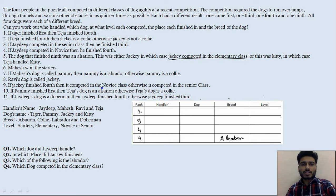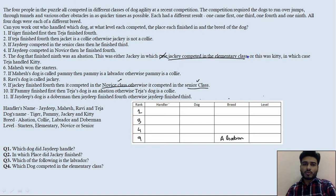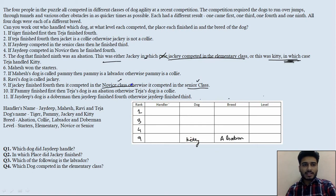The ninth condition says: if Jackie finished fourth then it competed in the novice class, otherwise it competed in the senior class. So the only two classes possible for Jackie are novice or senior — elementary is not possible for Jackie. Since the earlier branch said Jackie competed in elementary, that is eliminated. Therefore the second branch must be true: the ninth-place dog is Kitty, and Teja handled Kitty. We fill in Teja at ninth position.